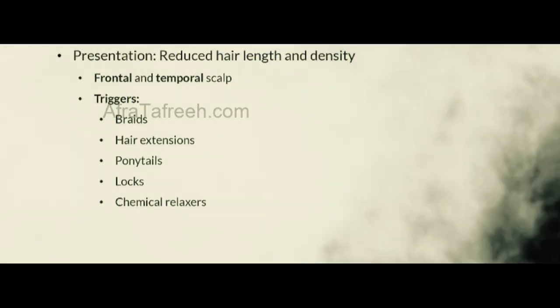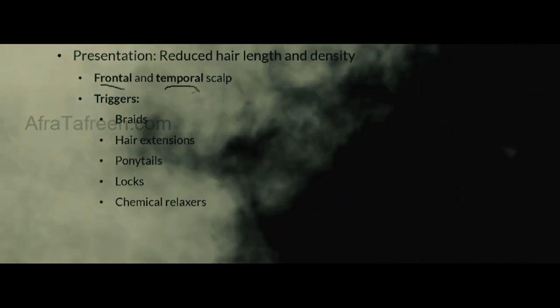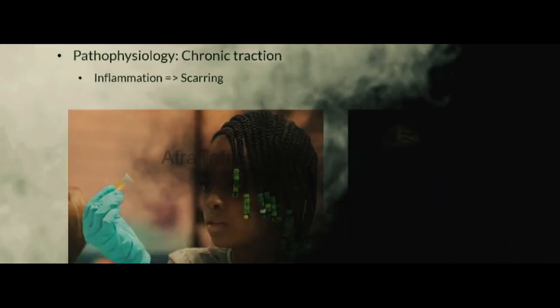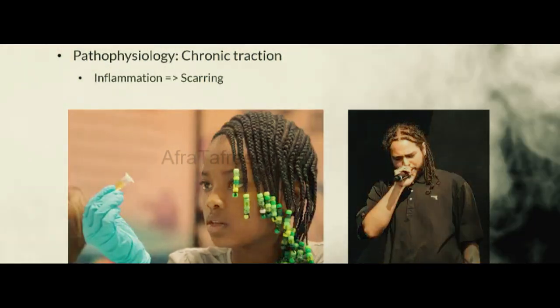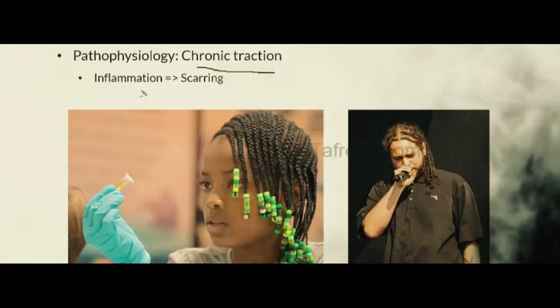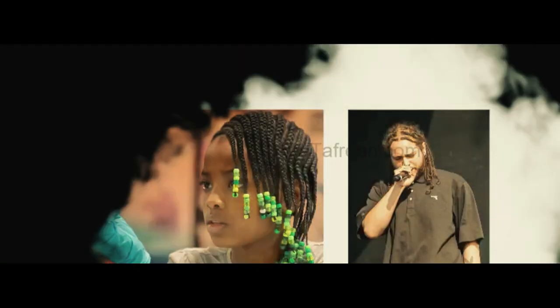Moving on to traction alopecia, this condition presents with reduced hair length and reduced hair density, particularly involving the frontal and temporal scalp. Key triggers to look for include the use of braids, hair extensions, ponytails, locks, and chemical relaxers. These all result in chronic traction of the hair and scalp, ultimately leading to inflammation which over time can cause scarring and permanent hair loss. Examples of hairstyles that can lead to traction alopecia include locks and braids.